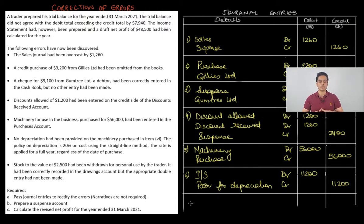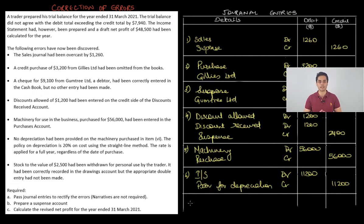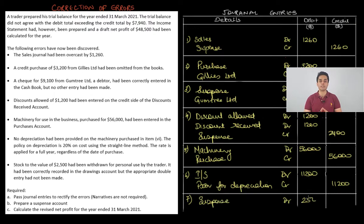The last error: stock to the value of 2500 has been taken for personal use by the trader. The effect was given correctly in the drawings account, but no other effect was given. The journal for stock drawings is Drawings Dr, Purchases Cr. Drawings has been debited but purchases has not been credited. So we credit purchases and debit suspense: Suspense Dr 2500, Purchases Cr 2500. We have now completed all journal entries required to rectify the errors.